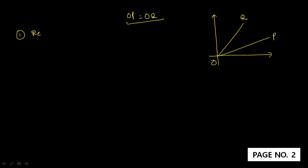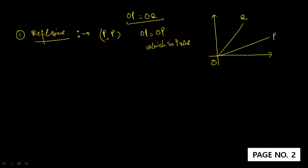Number one: for reflexive. What do I have to show for reflexive nature? Let us consider two points P and P. OP is equal to OP, which is true, because I am considering only a single point. It means the first statement is true — the relation is reflexive. This means the pair (P,P) belongs to R.